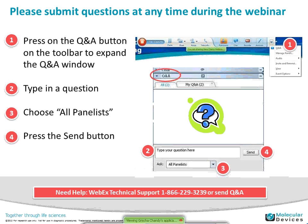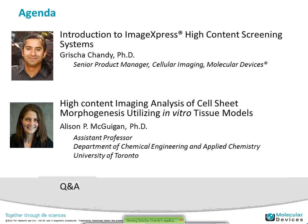The agenda is: I will give a short introduction to the ImageExpress High Content Screening Systems. I'm the product manager for cellular imaging at Molecular Devices, and Allison is using some of the tools in our products to do the work she's doing. Allison is going to be talking about high-content imaging analysis of cell sheet morphogenesis, utilizing miniaturization models.